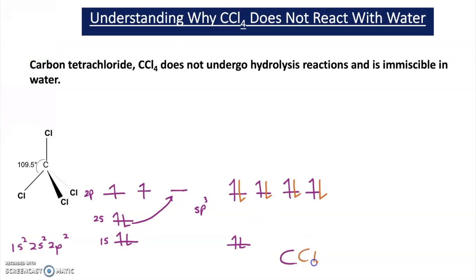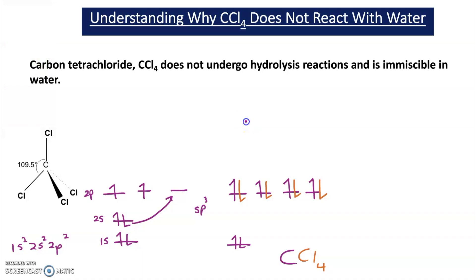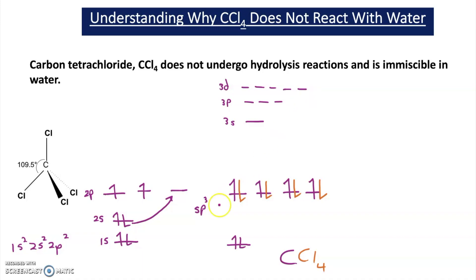The reason that carbon tetrachloride doesn't react with water is that there are no vacant d-orbitals nearby for the water to bond to — and by nearby we mean near enough in energy. The next orbitals are the 3s, 3p and 3d orbitals, but these are too far away in terms of energy for water to bond to — they're too high in energy and not accessible. Therefore water doesn't bond to these, and that's why water doesn't react with carbon tetrachloride.